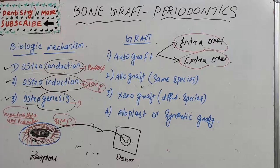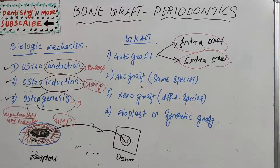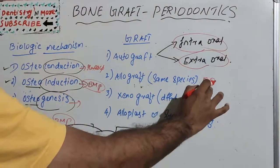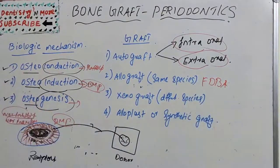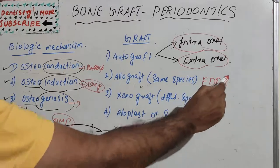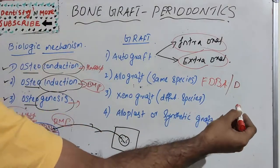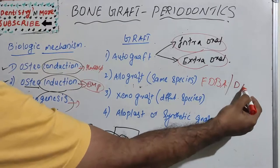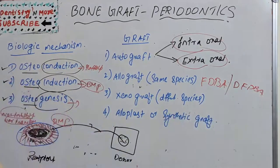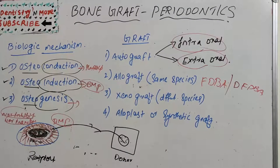Four types of allografts are available: frozen cancellous iliac bone marrow, cryopreserved bone from the head of a femur, FDBA (freeze-dried bone allograft), and DFDBA (demineralized freeze-dried bone allograft).